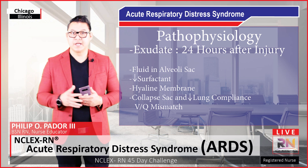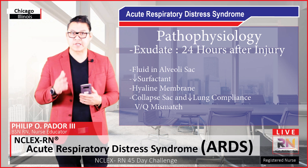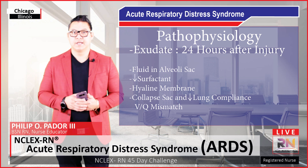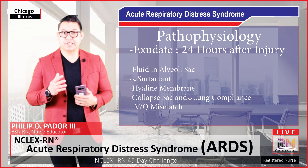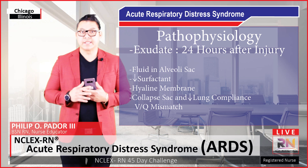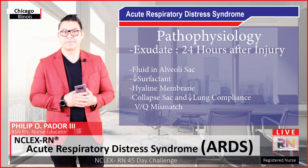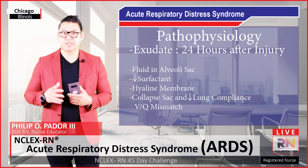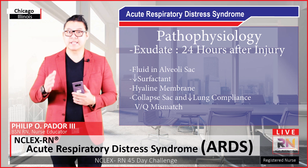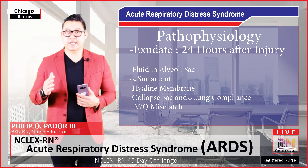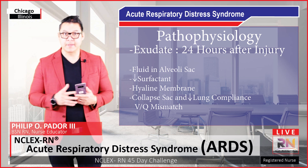With all this going on — the fluid buildup in the alveoli sacs, the decreased surfactant, and the hyaline membranes developing — it's all going to lead to the alveolar sacs collapsing. Also, you're going to see a decrease in lung compliance, throwing us into the VQ mismatch. As a nurse looking at your patients, there's a hallmark sign and symptom to remember: refractory hypoxemia. You can give the patient high concentrations of oxygen and it's not going to increase their oxygen level, because the lungs are getting stiff and the sacs are collapsed. That oxygen cannot flow down through that sac to go into the capillaries and replenish the body.